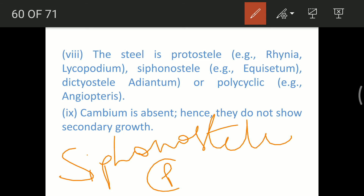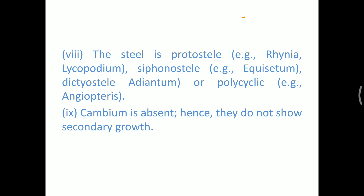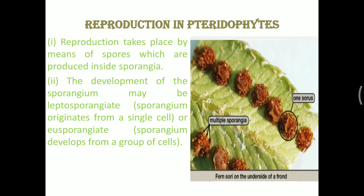In siphonostele, pith is in the center, then xylem, then phloem — just remember that. Cambium is absent because these plants grow only for one season, so there is no chance of growth over several years, and therefore secondary growth is not seen in pteridophytes.